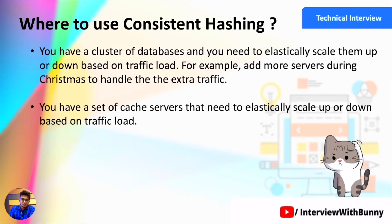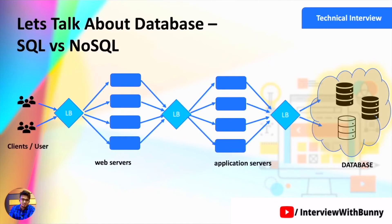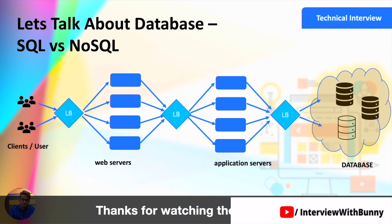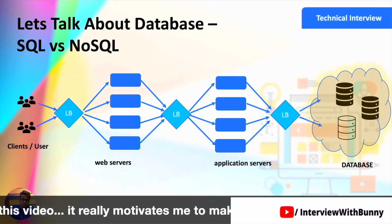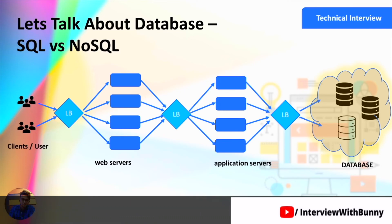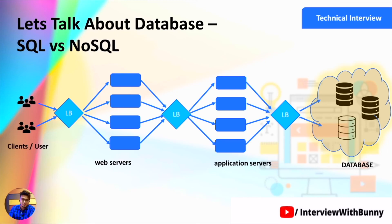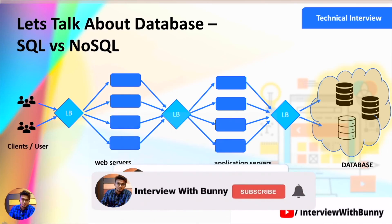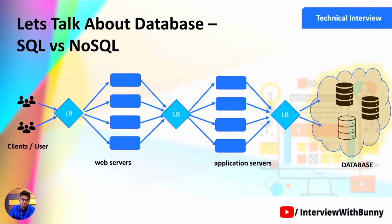Hopefully you are now clear on what consistent hashing is and how to implement it for distributing load in a large-scale distributed system. In our next video tutorial series on system design, we will discuss databases in detail — the different types of databases available, why we need a NoSQL server rather than a SQL server in a distributed system, and different use cases for databases such as Oracle and NoSQL databases like Cassandra. If you like this video, please do like and share it, subscribe to the channel, and hit the bell icon so you never miss an update. See you in the next video — thank you!